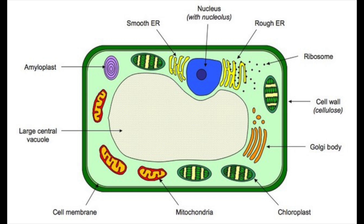Next, the permanent vacuole contains cell sap. Then there's the cell wall — do remember the cell wall is made of cellulose, and you will need to know that. This provides support for the plant cell.